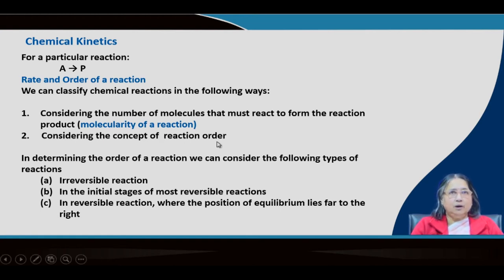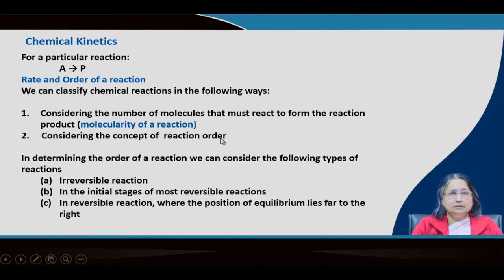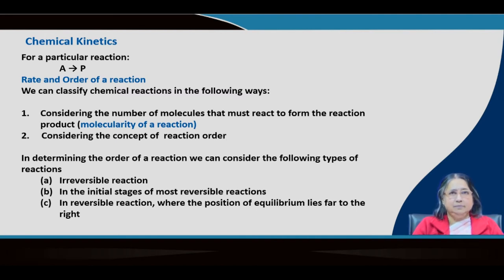The second classification is in terms of reaction order, and this order has to be determined by experiment. We cannot directly from a balanced equation tell that the order of the reaction is 2, 1, or 0. Sometimes molecularity and order may be the same, but not necessarily — they may be different. This is a very important concept for chemical kinetics.